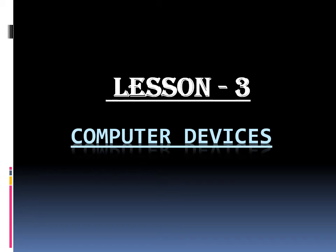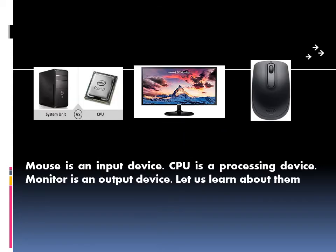Hello everyone, today we are going to learn about computer devices. Mouse is an input device, CPU is a processing device, and monitor is an output device. Let us learn about them.